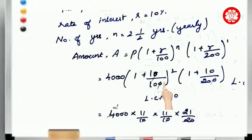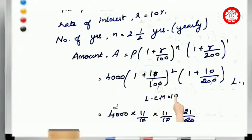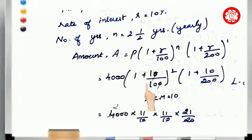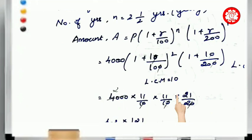Now we simplify. We reduce 10 by 100 — the zeros cancel — so the remaining value is 10 in the denominator. Then 1 plus 1 by 10 gives us 11 by 10. So we take the whole square of 11 by 10.